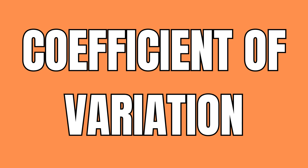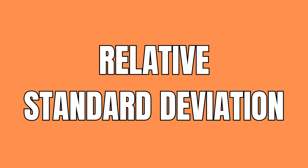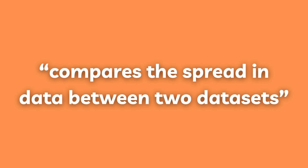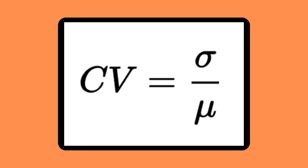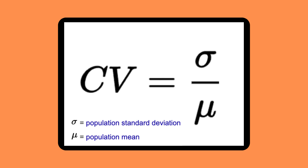The coefficient of variation, also known as the relative standard deviation, compares the spread of data between two datasets. The coefficient of variation equals the standard deviation divided by the mean.